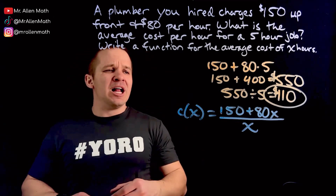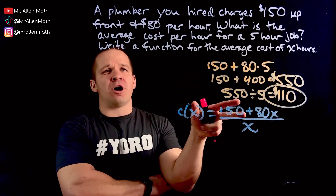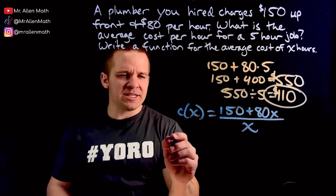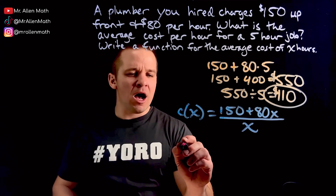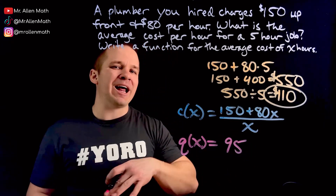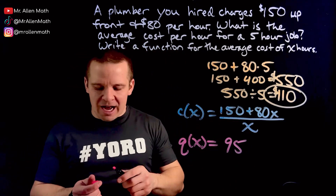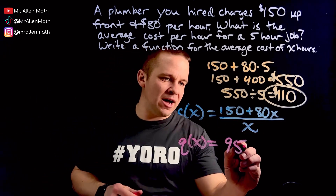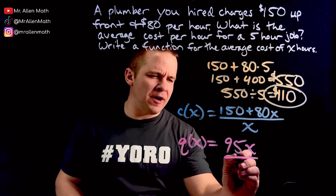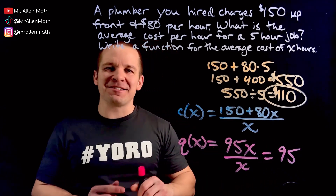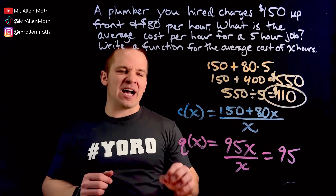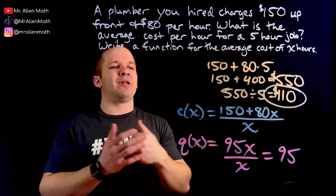What if we throw in a curve ball? Let's say another plumber charges $95 an hour — flat rate, no changing. So $95 per hour every time. If we're averaging the pay, it's 95X divided by X, which is just the constant 95. So for that plumber, the cost per hour function is just 95. The first one is (150 + 80X) / X. Maybe we want to figure out which plumber we should go with based on how long the job is expected to take.